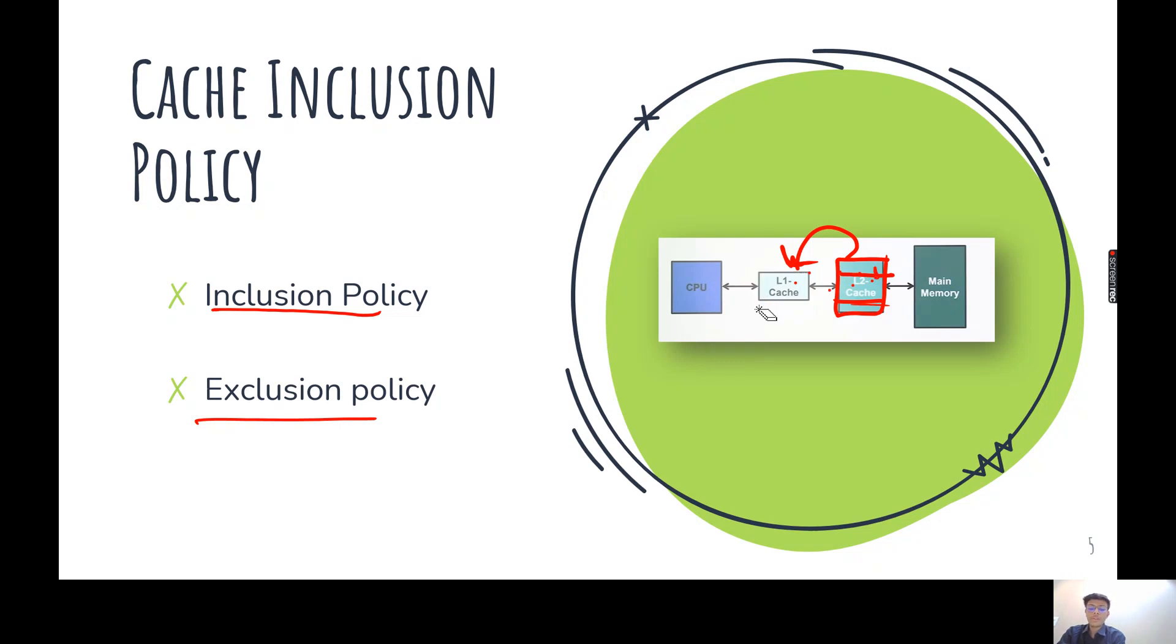But in exclusion policy, the policy is like that, L1 cache, the data in L1 cache must not be present in L2. So suppose if one data is not present in L1, but present in L2 and it is frequent, it will transfer to L1 by moving that data from L2 to L1. And L2 will not have that data afterwards. So this is exclusion policy.